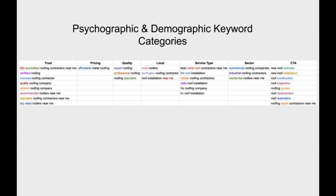I'll go through some of these columns to give you a sense of what I'm talking about. An emotional need that customers want is trust, and this travels across most industries. With roofing, that comes up in terminology such as BBB accredited, certified, licensed, quality, reliable, recommended, reputable, and top rated. These are all variations of a certain type of term that fall under this category and should be mentioned at least somewhere on that landing page, in as many variations as makes sense — this helps demonstrate trust to the person visiting the website.